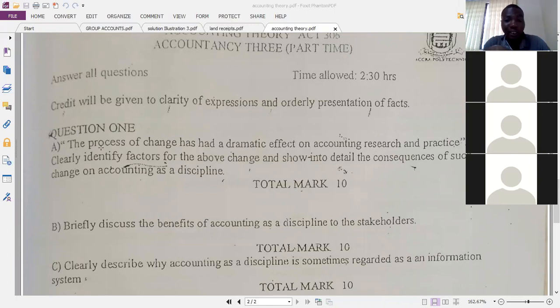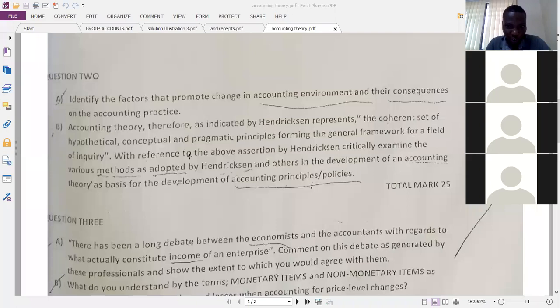But just that in this question, they have added more words. So you see, what is this man trying to say? What dramatic effect and things? Then you are confused. So the question one here, we've answered it in this particular illustration, question 2a.